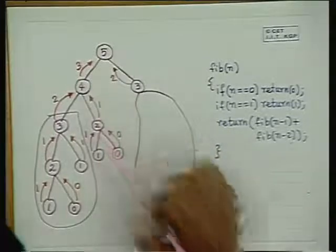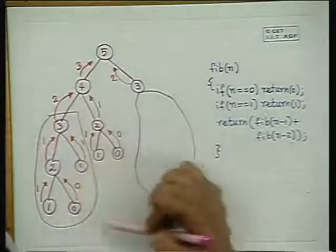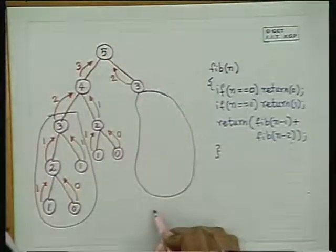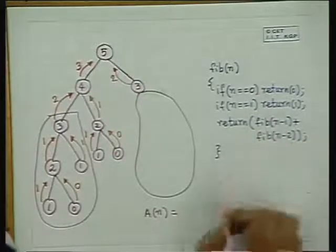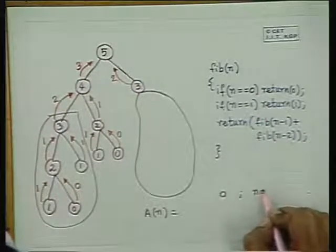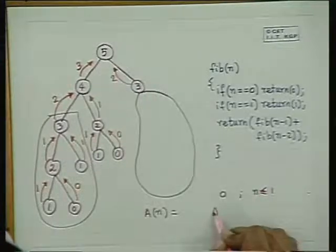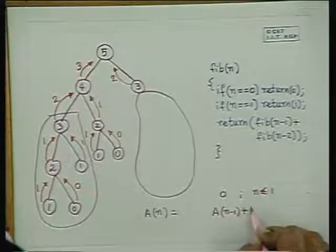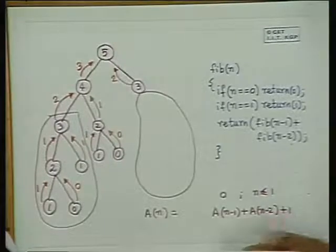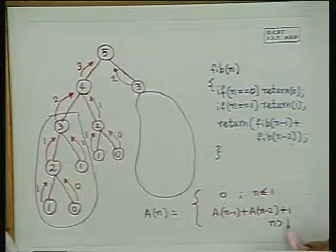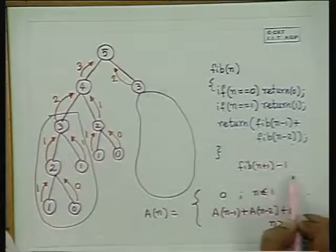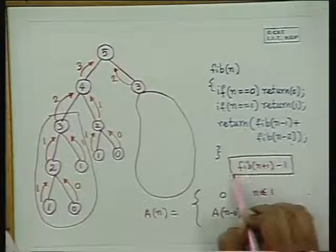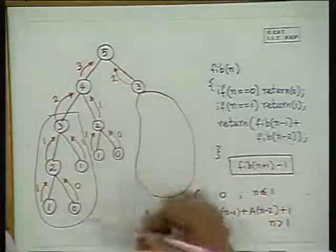This is how we solve the Fibonacci number problem. We developed a recursive equation to find out how many additions are performed: a(n) = 0 if n equals 1, and a(n) = a(n-1) + a(n-2) + 1 for n greater than 1. We solved this and saw it comes to approximately Fib(n+1) - 1 or something like that. Since Fib(n) is an exponential number, this algorithm is going to take exponential time.